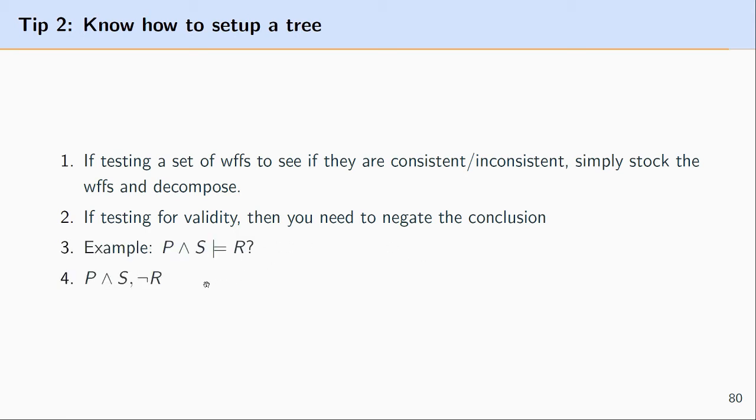So let's say we're looking at the formula or the sort of entailment P and S entails semantically entails R and we want to see does this really does R is R really entailed by P and S and so when we use the truth tree test the formulas that we're going to stack are P and S and the negation of the conclusion. So I want to be sensitive to how to set up the tree when you go about kind of using the tree test.